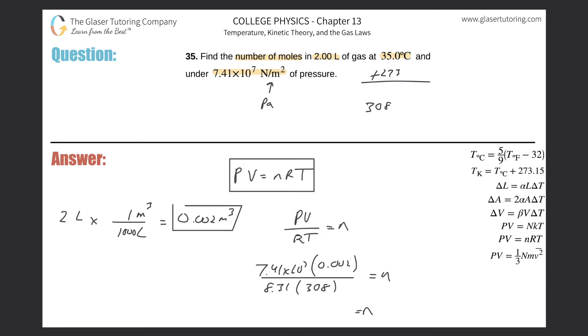Simply plug that into the calculator: 7.41×10^7 multiplied by 0.002, divided by 8.31 times 308. And what do we get? About 57.9. That's moles, and that's the answer. Simple, easy peasy.